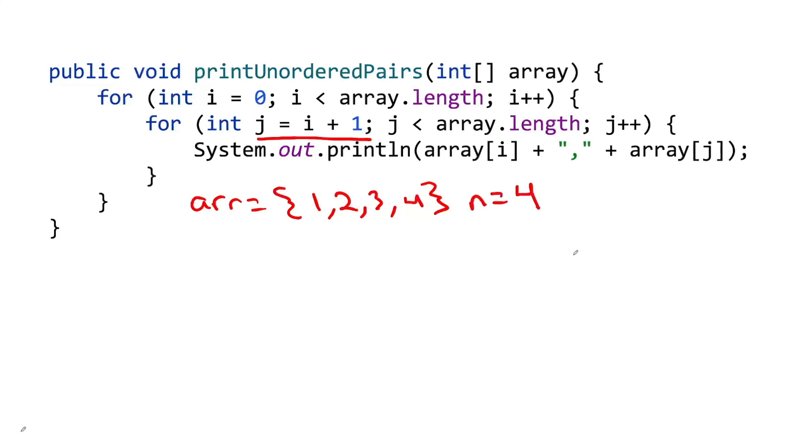For i equals 0, so we start out 0, then we go to the inner for loop, j is equal to i plus 1, or j is equal to 0 plus 1. So initially, i is 0, j is 1. And then we just simply print i, comma, print j. So i is 0, j is 1. All right, now we increment j on the inner loop. j goes from 1 to 2. 2 is less than 4. So now we print out 0, 2, because i is still 0. We increment j again. j is 3. 3 is still less than 4. So now we print out 0, 3.